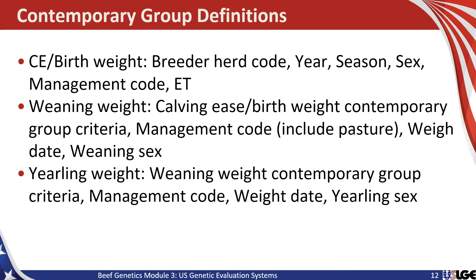Animals that are natural service and AI calves are in one group, and animals that are embryo transfer calves are either in another group or forced into single-animal contemporary groups due to the recipient dam effect. Weaning weight, another commonly reported trait in our genetic evaluation system, utilizes the birth contemporary group information and then adds weaning management code — which oftentimes includes some kind of pasture management code — as well as the weaning weight date and weaning gender. Weaning weight dates typically are used to define age windows for calves, and under BIF recommendations those range from 160 days for the youngest calf to 250 days for the oldest calf.